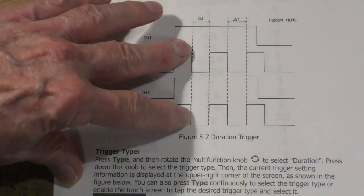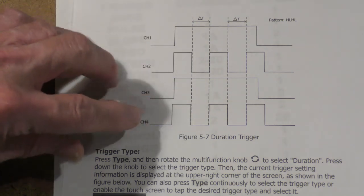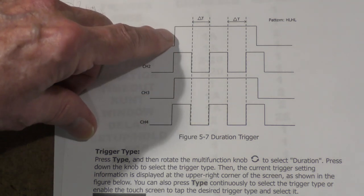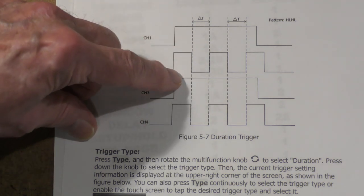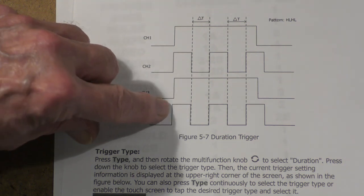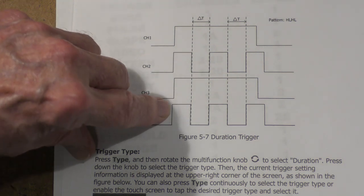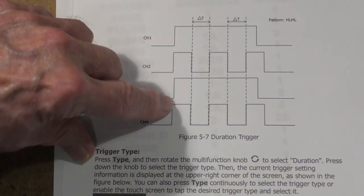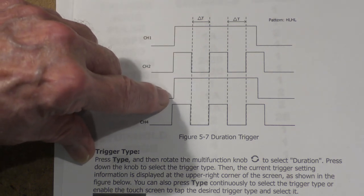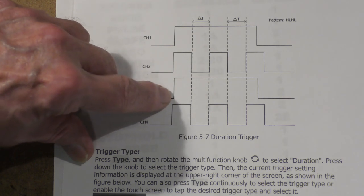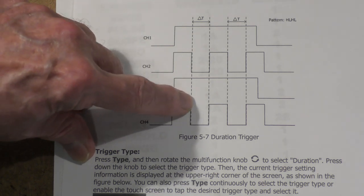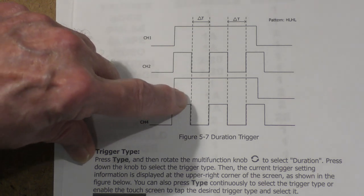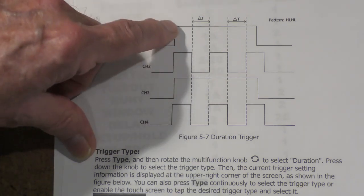The difference between the duration trigger and the pattern trigger is with the duration trigger, the pattern has to exist for a specified amount of time. So suppose you're looking for this pattern, it's high, high, high, high, and you're not interested in times when there is just a small overlap. You want to make sure that, for example, that pattern lasts for let's say 100 nanoseconds.